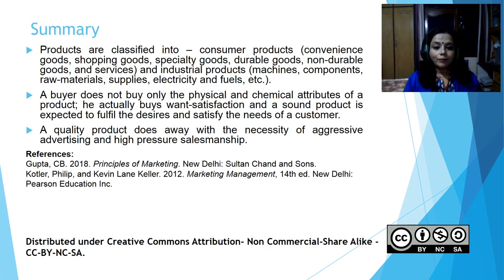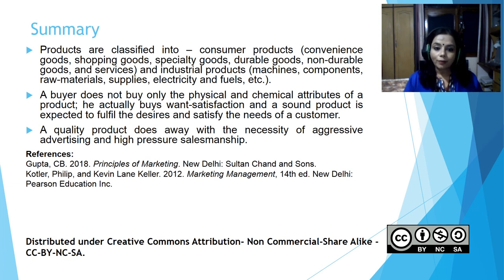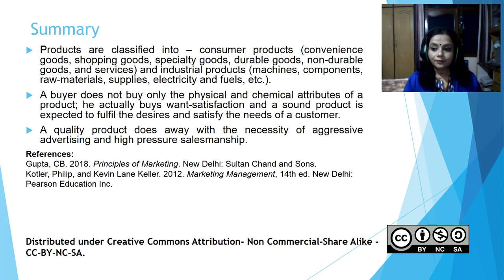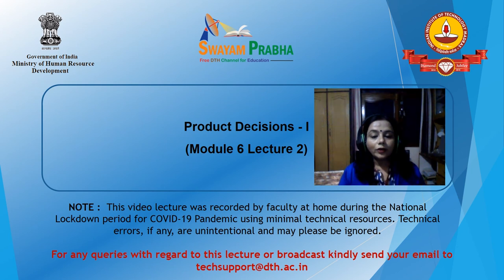To summarize this lecture: products are classified into consumer products and industrial products. Consumer products include convenience goods, shopping goods, speciality goods, durable goods, non-durable goods, and services. Industrial products include machines, components, raw materials, supplies, electricity, and fuels. A buyer does not buy only the physical and chemical attributes of a product — they actually buy satisfaction, and a sound product is expected to fulfill desires and satisfy the needs of the customer. A quality product does away with the necessity of aggressive advertising and high-pressure salesmanship. Thank you very much, students. This was Product Decisions Part 1, Module 6, Lecture 2.